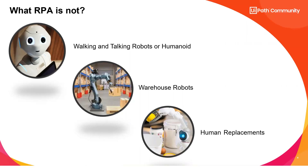RPA is helping humans by taking away repetitive and mundane tasks — like going to a website, downloading data, and saving it to Excel, which a human does again and again. Humans are supposed to work on more intelligent things that require decision-making. The repetitive tasks can be given to robots so humans can focus on more decision-driven and interesting work. This is not a human replacement.